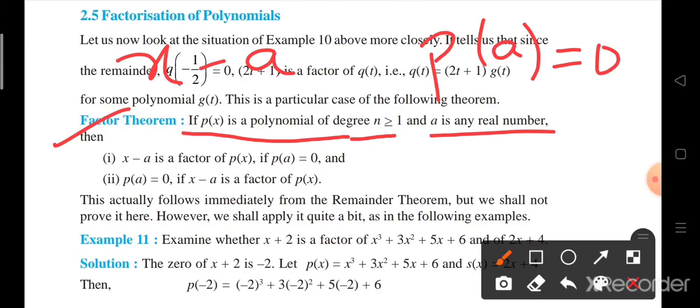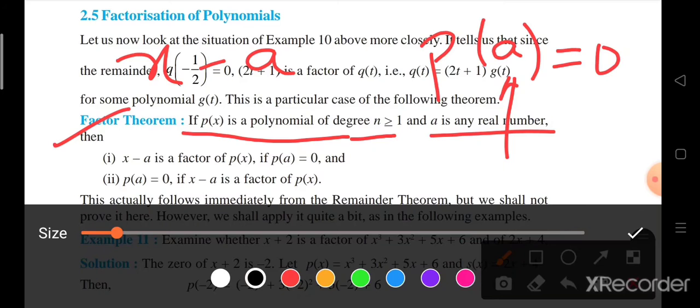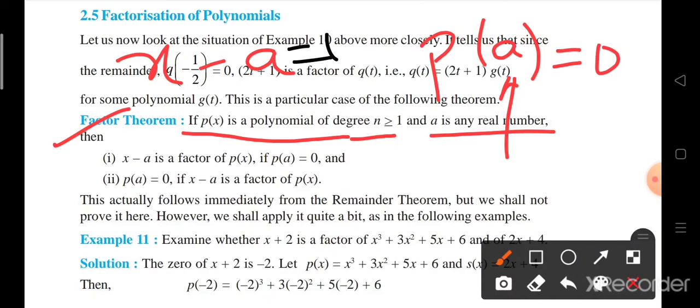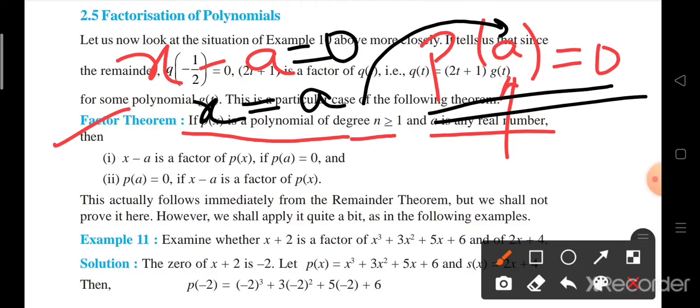then we can say that x minus a is the factor of p(x) when p at x equal to a is equal to 0. Now, from where does this value a come? We will take this x minus a and place it equal to 0. Then we get the value of x as a. We place this value in place of x in the polynomial and check whether the value comes out to be 0 or not. If the value is coming out to be 0, then it is the factor of the polynomial and this value is nothing but remainder.